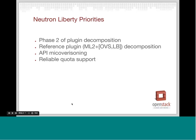As we looked at Liberty, what Neutron is going to be looking at, we're going to definitely continue with phase two of the plugin decomposition — we'll talk more about that in a future slide. That is one item where the core review team is focused on completing the mission and vision we had when we started that in Kilo. As part of that, our plan is also to decompose the reference plugin, which is ML2 and the Open vSwitch Linux bridge agent. We've also started working on API micro-versioning and increasing our quota support as well.